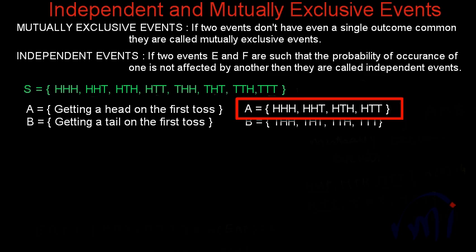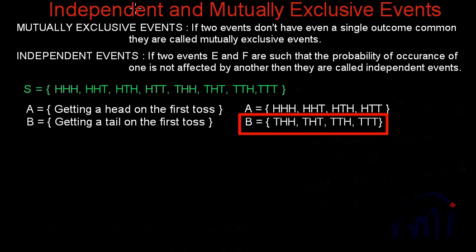Event A will have four outcomes where there is a head on the first toss: {HHH, HHT, HTH, HTT}. These will be the four favorable outcomes to event A. And event B will also have four favorable outcomes where there is a tail on the first toss.